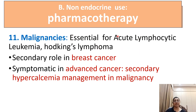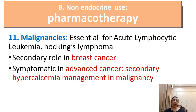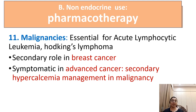In cancer, glucocorticoids are used in leukemia and Hodgkin's lymphoma, with a secondary role in breast cancer. They are used symptomatically in advanced cancer and for hypercalcemia management in malignancy, as they reduce calcium levels in malignant patients.